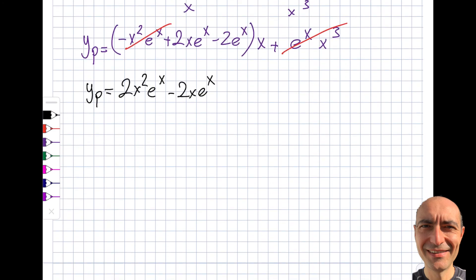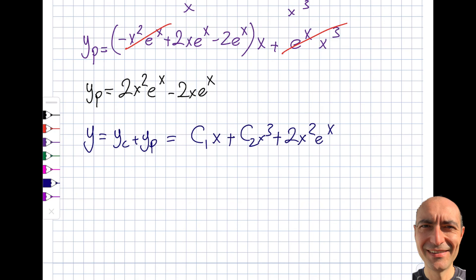The complete general solution is y = yc + yp = c₁x + c₂x³ + 2x²eˣ - 2xeˣ. That's the final answer. Now I'm going to move on to non-linear equations — and that will be real fun. Thank you, have a nice day!